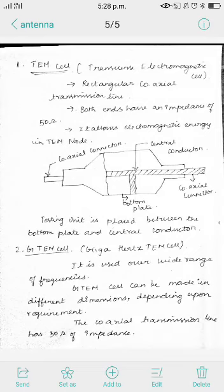The first one is the Transverse Electromagnetic (TEM) cell. It is a rectangular coaxial transmission line. A very important consideration is impedance matching between the ends, because impedance mismatch causes reflections inside the coaxial cable. Both ends are matched to 50 ohms. It allows electromagnetic energy only in transverse mode, in order to overcome electromagnetic interference during measurement.